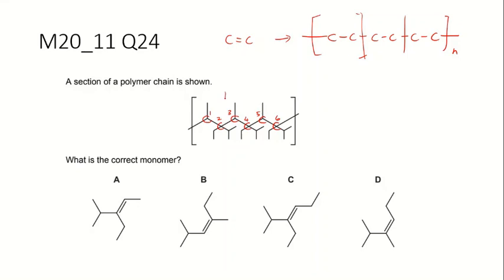So every two carbons I'm going to draw a line to separate them. Okay, so carbon one and two from the same monomer, carbon three and four from the same monomer, carbon five and six from the same monomer. So this section has three repeating units, so I'm going to take out one repeating unit from carbon one and two only.